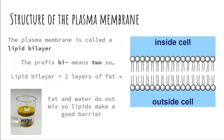Bi means two, and lipids are fats. So a lipid bilayer is two layers of fat. We learned about lipids in unit one — it all connects. So the plasma membrane is made up of two layers of fat, that's why it's called a lipid bilayer.